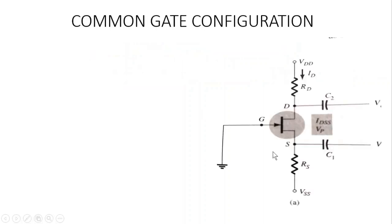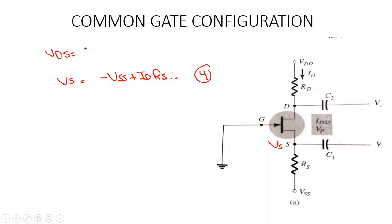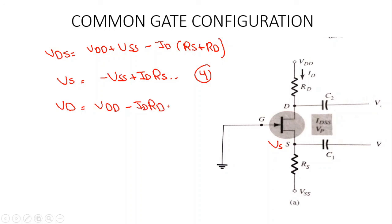To find VSS, applying KVL gives: VSS = −VSS + ID·RS. This is equation four. Equation three was VDS = VDD + VSS − ID·(RS + RD). Finally, to find VDD we have VDD = VDD − ID·RD. These are equations four and five. This completes the analysis of the common gate configuration.